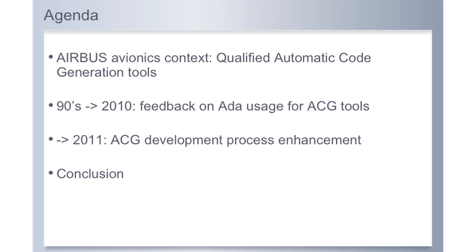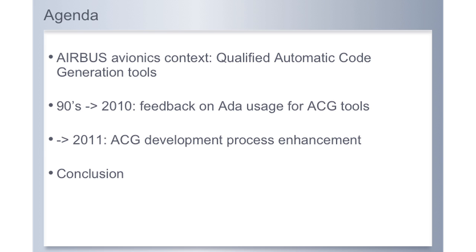My presentation is in three parts. Firstly, I would like to give you an overview of the avionics context and particularly the qualified automatic code generation activity. Then I will give you an overview of our automatic code generator process development and the ADA usage in this context. And then I will give you information about enhancements that we plan with ADA and the ACG process development.